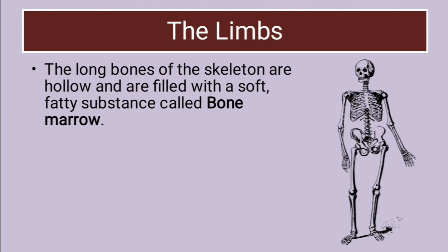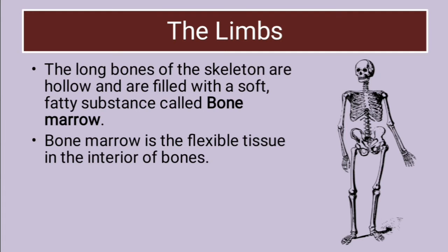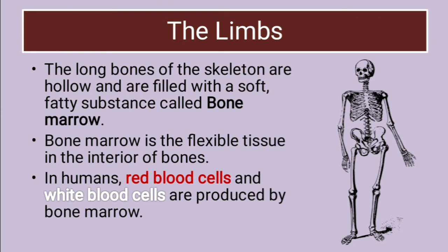The long bones of the skeleton are hollow and are filled with a soft fatty substance called bone marrow. Bone marrow is a flexible tissue in the interior of the bone. In the human body, red blood cells and white blood cells are produced by bone marrow. So bones are also a factory of blood, and not only do they give you structure but they also produce blood for you.